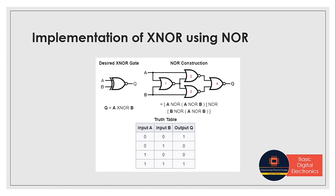Next we will see how to construct XNOR gate using NOR gate. To construct a two-input XNOR gate, we need four NOR gates. The inputs A and B are fed into the first NOR gate, and also into the second and third NOR gates. The output of the first NOR gate is fed as the other input into the second and third NOR gates. The outputs of the second and third NOR gates are then fed into the fourth NOR gate. So four NOR gates give us the functionality equivalent to an XNOR gate.